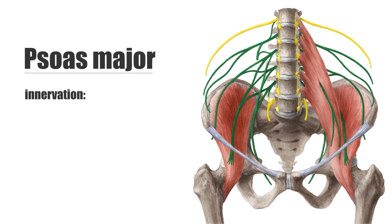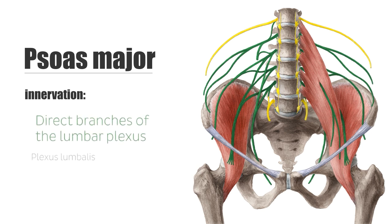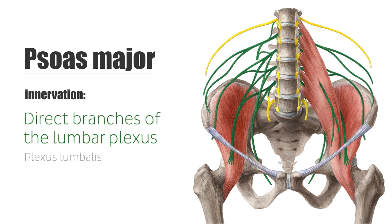The innervation of the psoas major is carried by the direct branches of the lumbar plexus. The lumbar plexus lies dorsally from the psoas major muscle, which is penetrated by the genitofemoral nerve. Medially from the psoas major runs the sympathetic trunk.